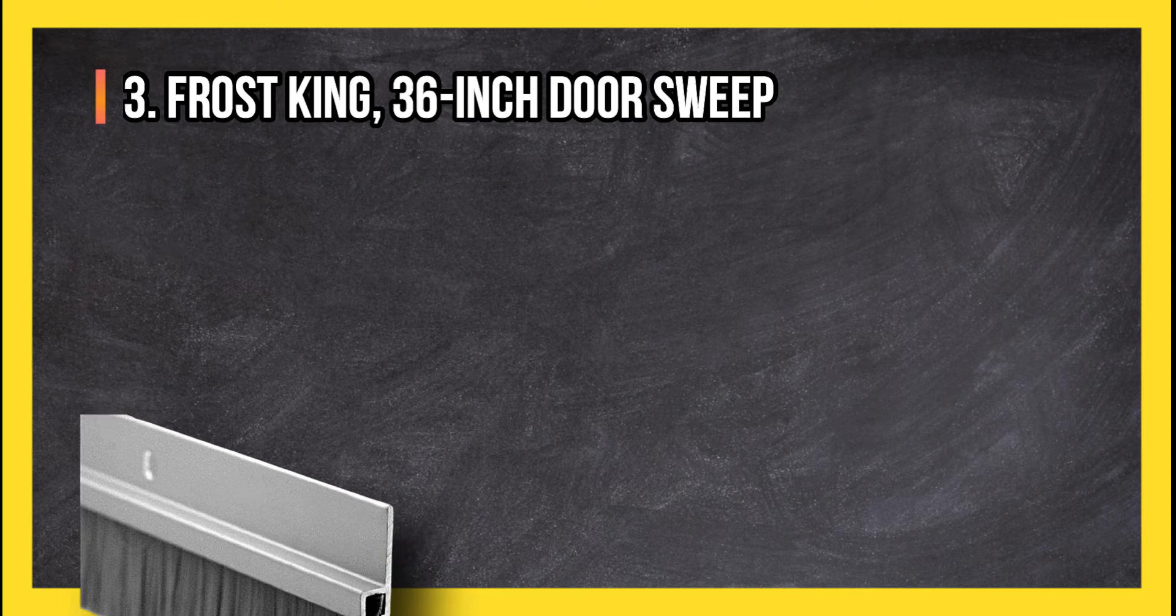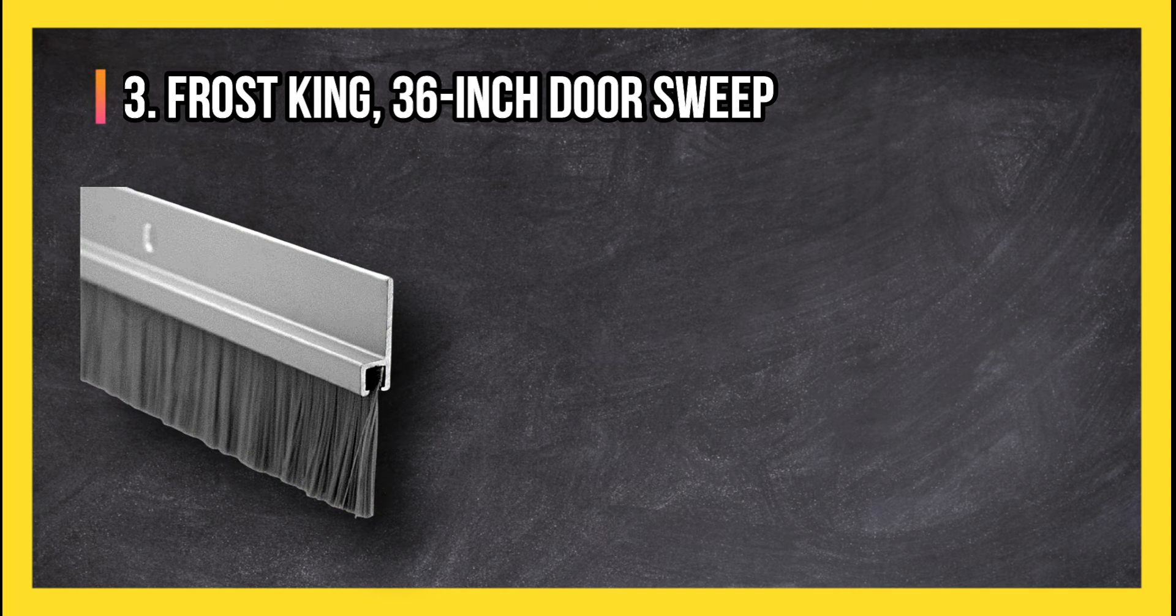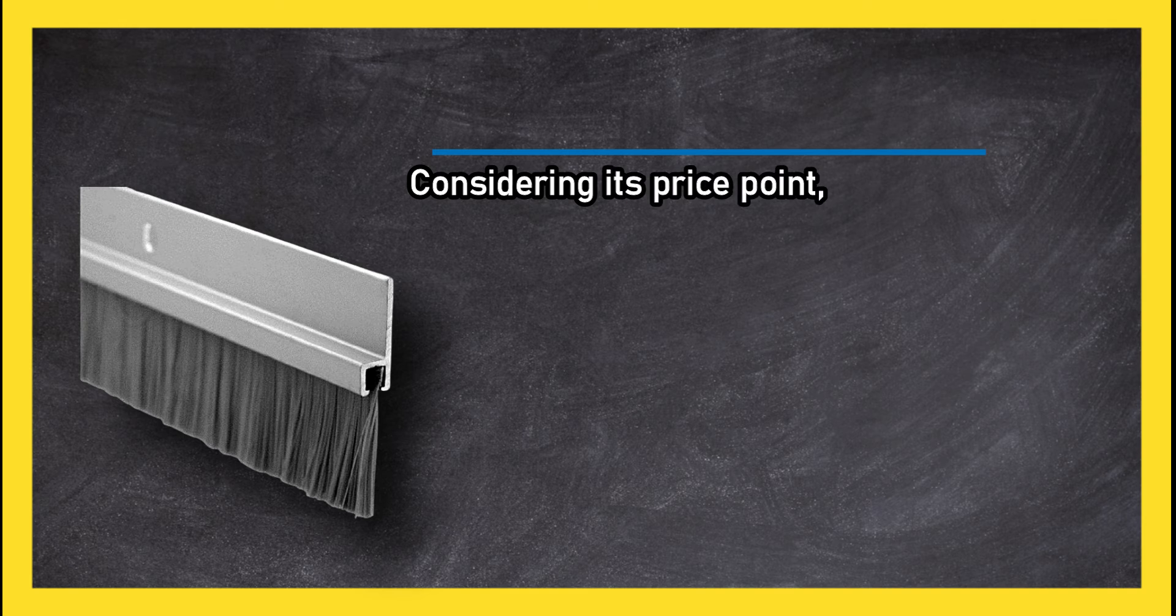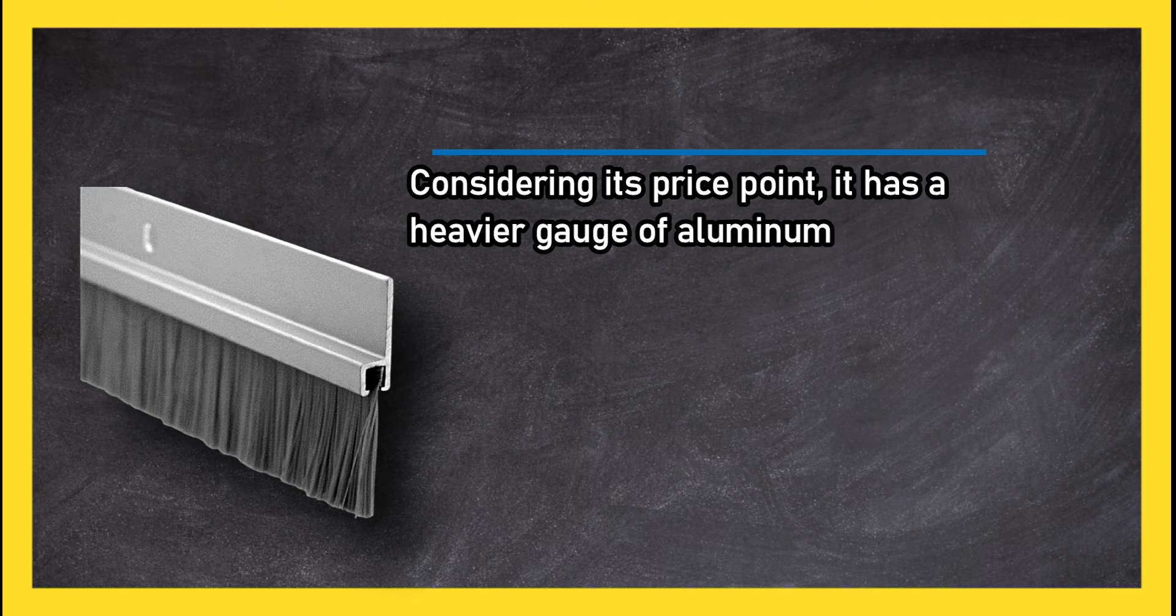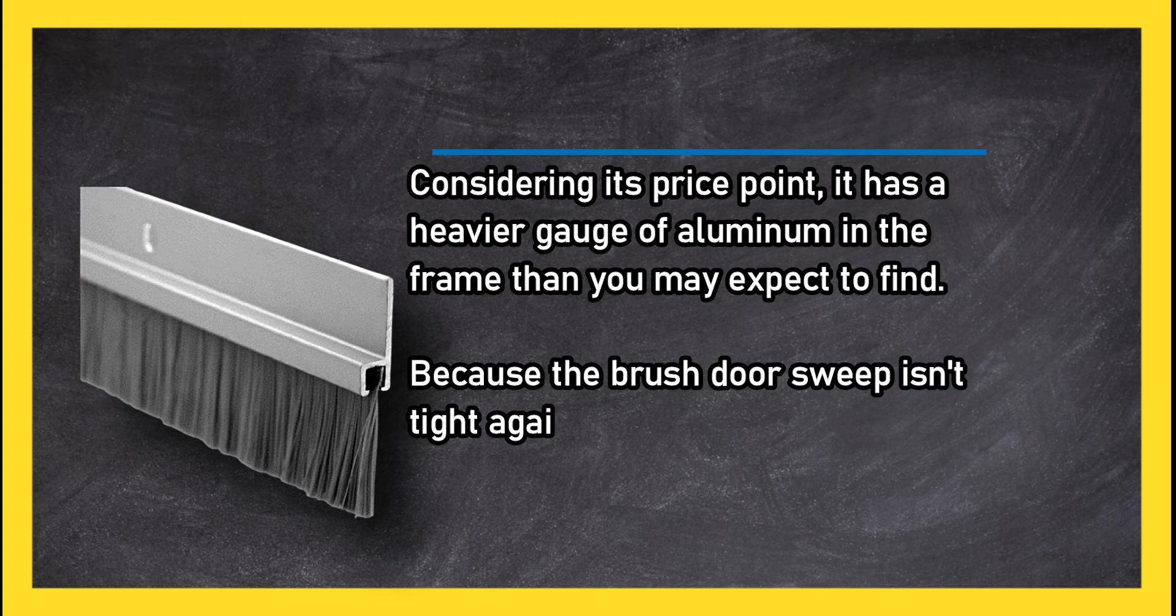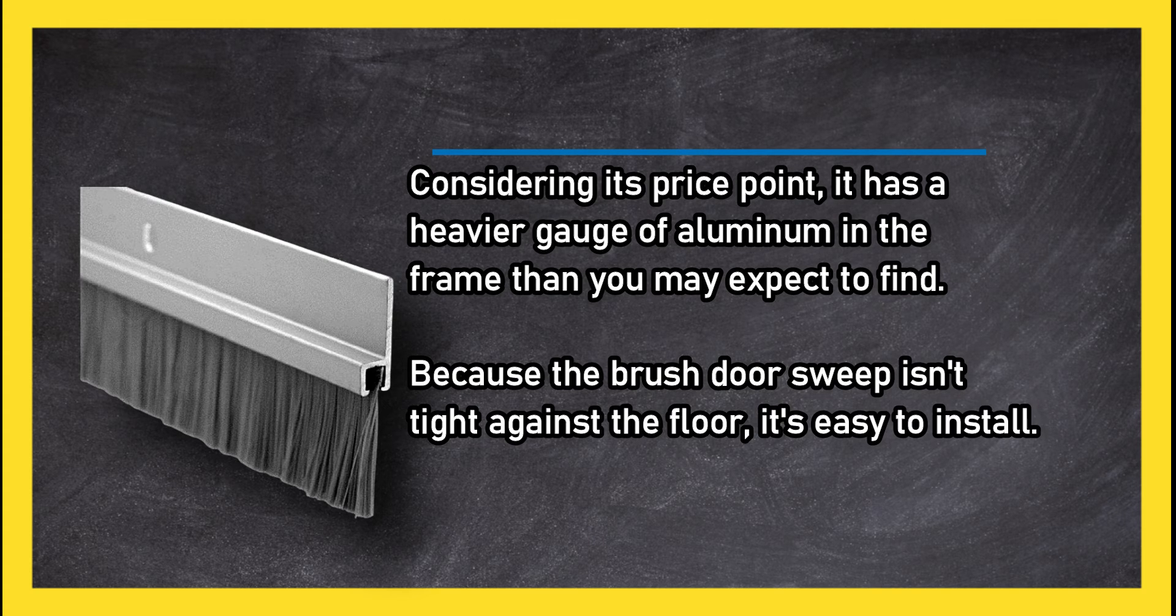At number three, Frost King 36-inch door sweep. Considering its price point, it has a heavier gauge of aluminum in the frame than you may expect to find. Because the brush door sweep isn't tight against the floor, it's easy to install.